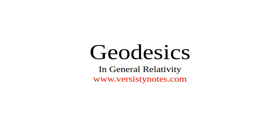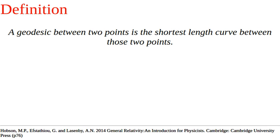Geodesics in general relativity. Let us start by defining a geodesic. A geodesic between two points is the shortest length curve between those two points. I note here that there are other equivalent definitions, but this is the one we will use.